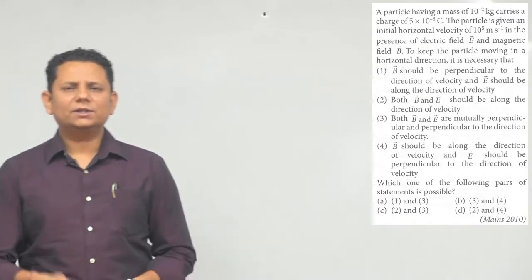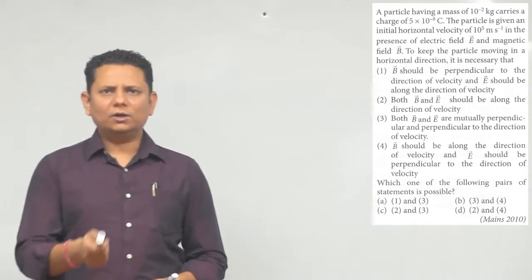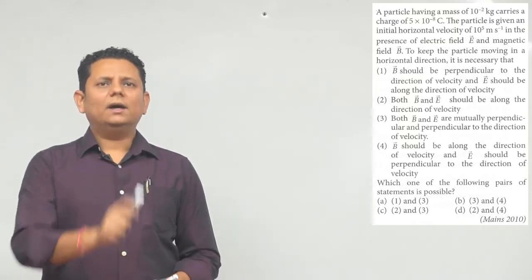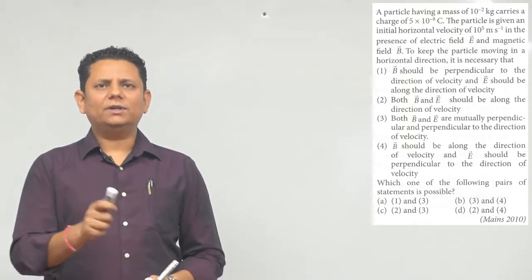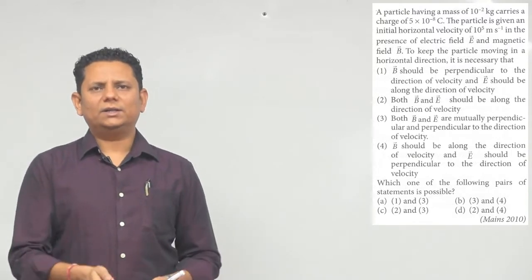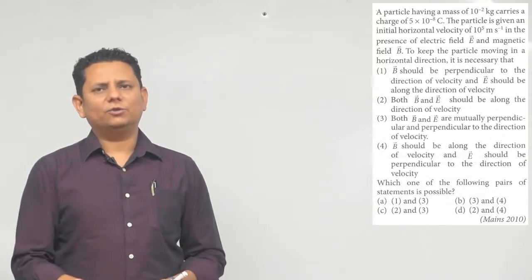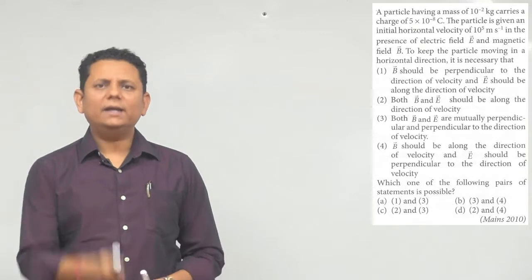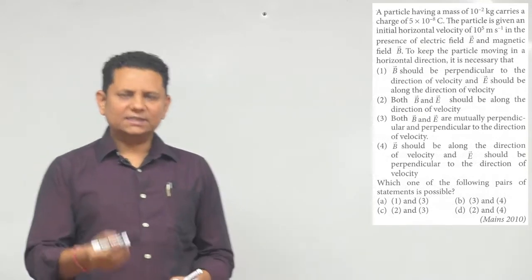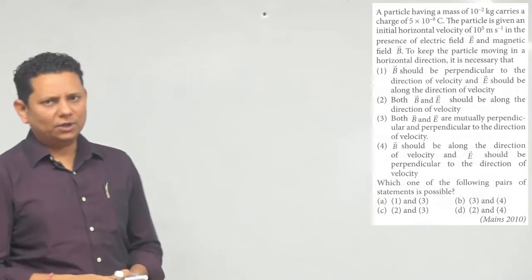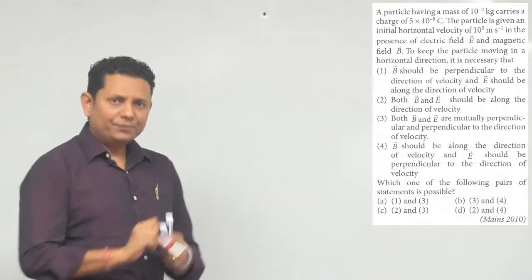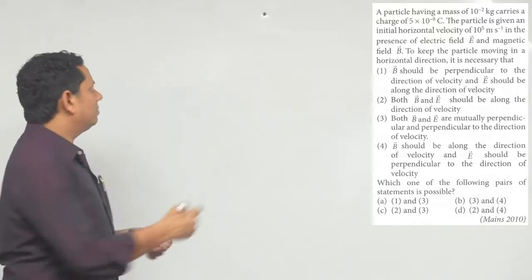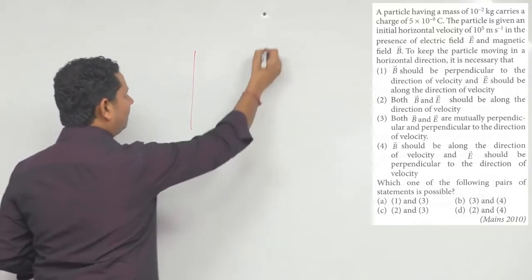हमारा सवाल है — which one of the following pairs of statements is possible? Options are: 1 & 3, or 3 & 4, or 2 & 3, or 2 & 4. यह सवाल सुनने में बहुत लंबा-चौड़ा है लेकिन करने में बहुत आसान है, अगर आपको Lorentz force के concepts क्लियर हैं।